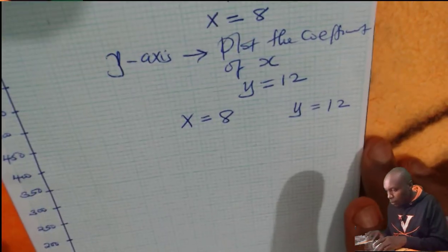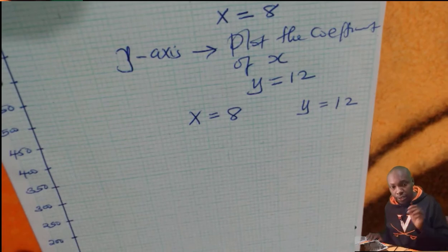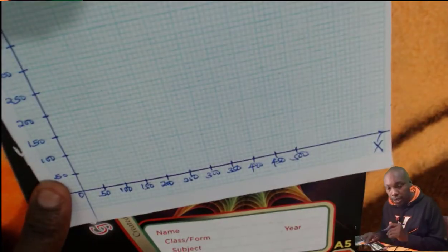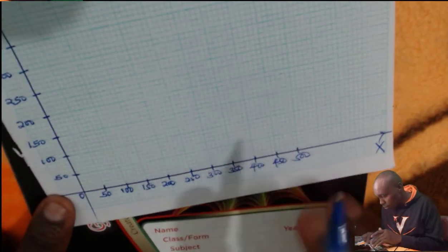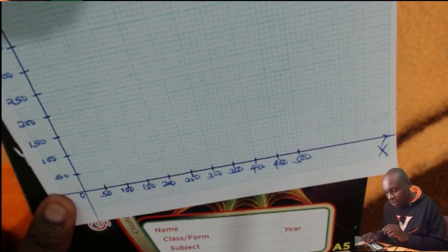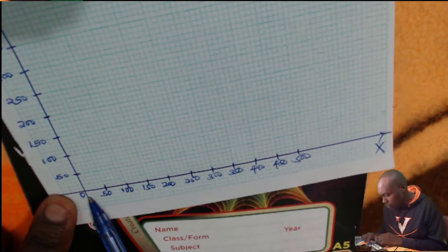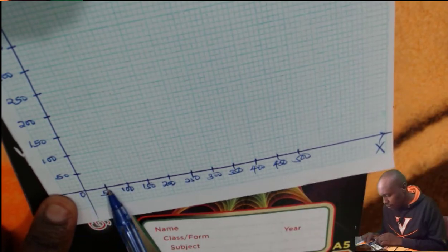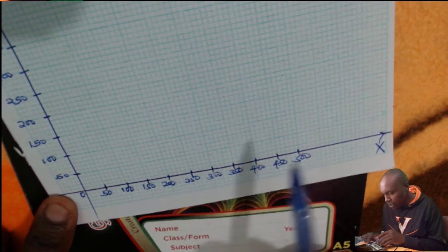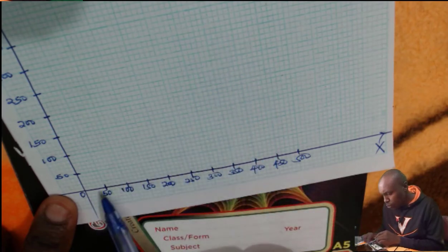Now, this is what I did. Now, when you look at x is equals to 8 and y is equals to 12, when you look at the scale that we used in that specific question, our scale was 1 centimeter represents 50 centimeters. So you'll notice that x is equals to 8 will be too small.